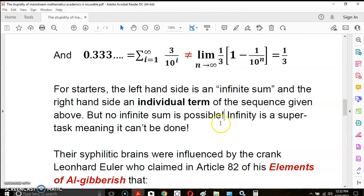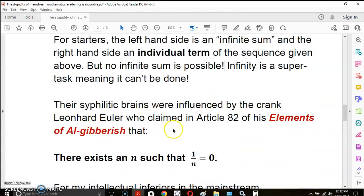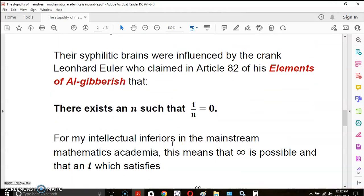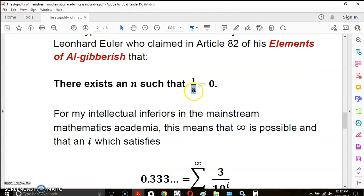So no infinite sum is possible. Infinity is a super task. And you know what a super task means? It means it can't be done. So in their dysfunctional brains, they were influenced by the crank Leonard Euler who claimed in article 82 of his elements of algebra that there exists an n such that 1 over n is equal to infinity, is equal to 0. There is no such n. And you can't say n is equal to infinity. That's garbage.